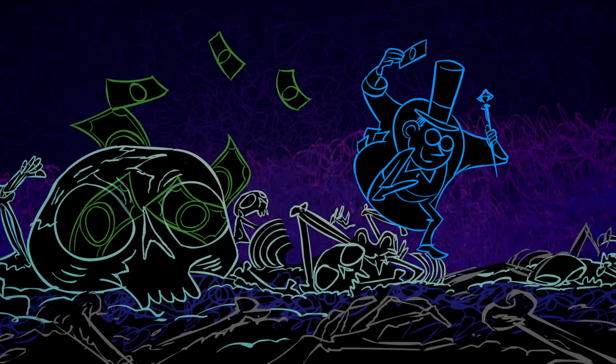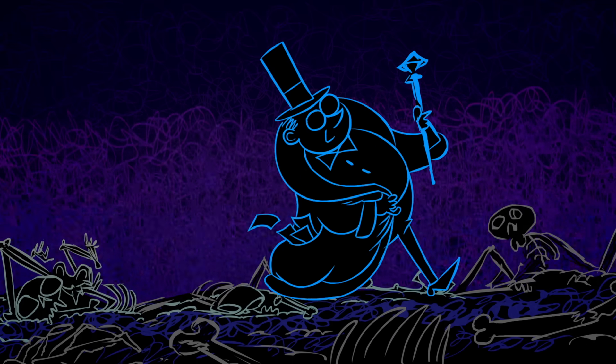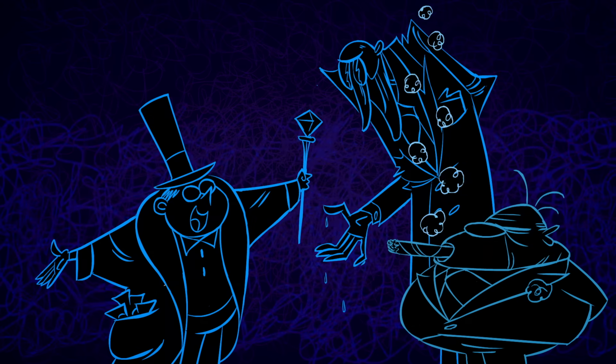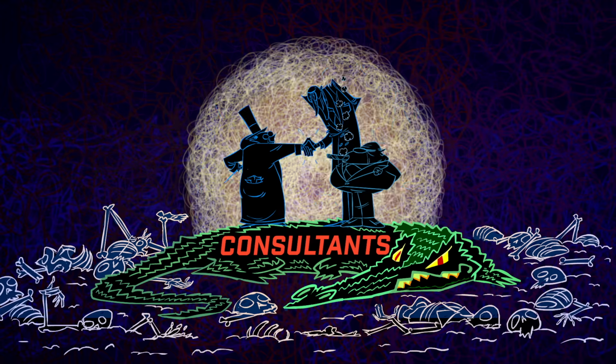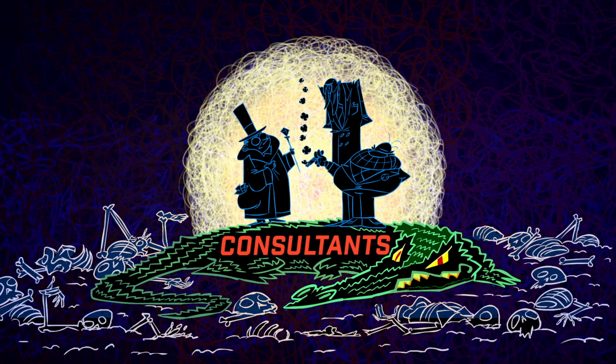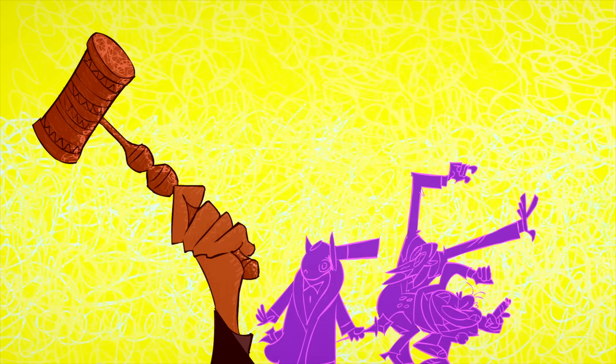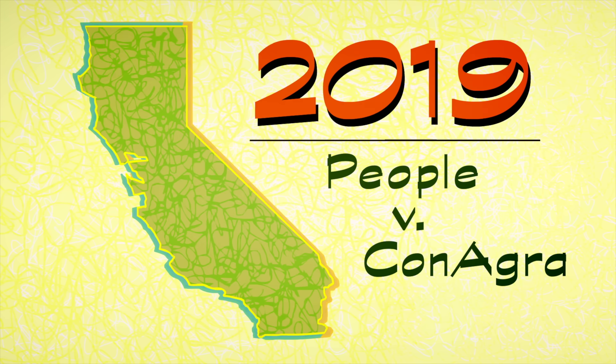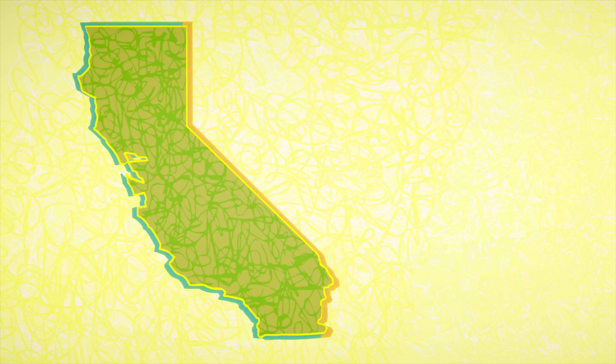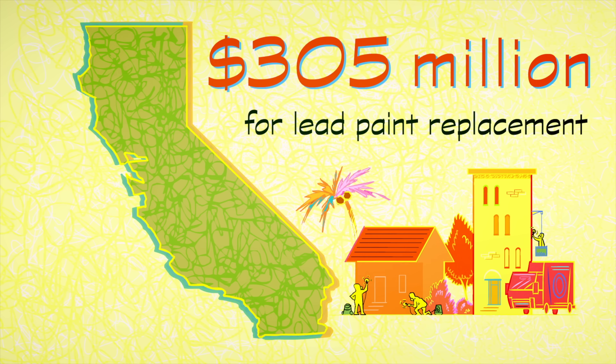The lead industry made billions following the same denial and disinformation playbook the oil and tobacco industries used, sometimes even relying on the same consulting firm. But there have been some steps towards justice. In California in 2019, lead manufacturers were ordered to finance over $300 million worth of lead paint replacement. A glint of levity in a history leaden with industrial greed.